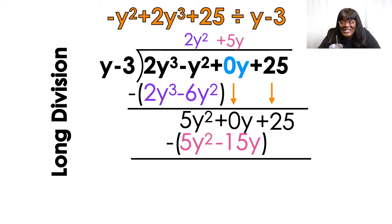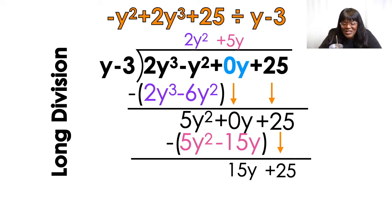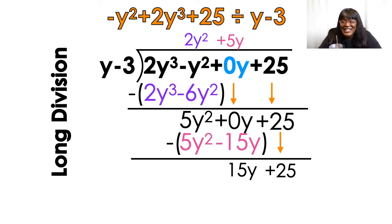Parentheses, subtract. 5y squared minus 5y squared cancels out. And then 0 minus minus 15y — minus minus is plus — so 15y. Bring down the 25. Start the process again. This time looking at that bottom 15y plus 25. What times y equals 15y? 15. 15 times y equals 15y.